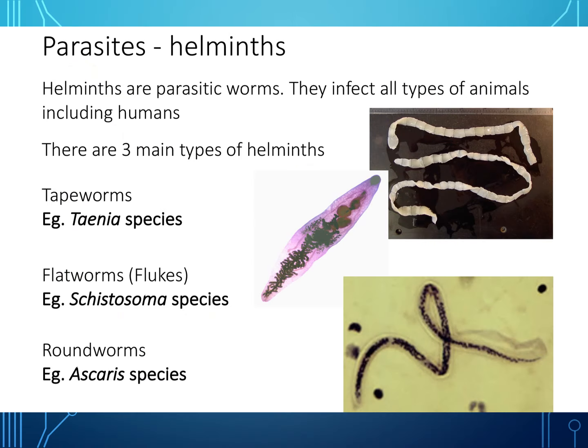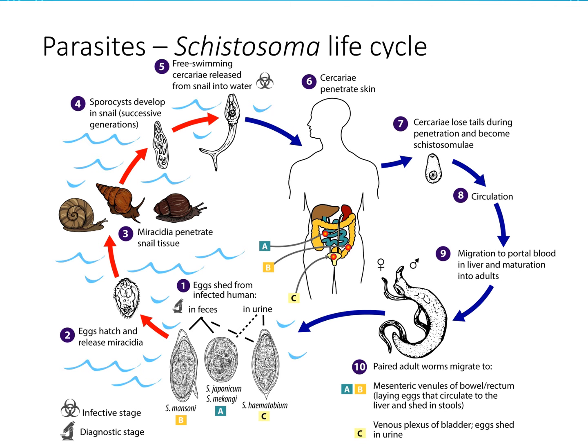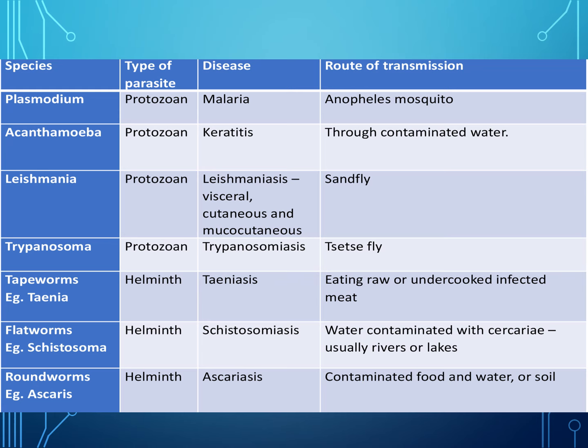Helminths are parasitic worms which infect all types of animals including humans. There are three types: tapeworms (Taenia species), flatworms — also known as flukes (Schistosoma species) — and roundworms (Ascaris species). Looking at the Schistosoma life cycle, eggs are shed from an infected human, hatch and release larvae, penetrate small tissues, and the sporocyst develops, eventually resulting in adult worms. This can happen through eating contaminated food or water, especially when traveling abroad.